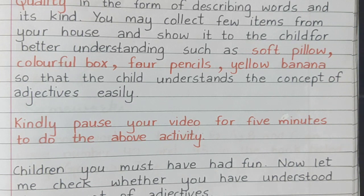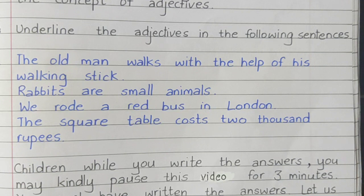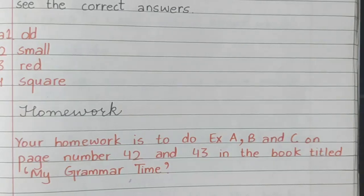Children, you must have had fun. Now let me check whether you have understood the concept of adjectives. Exercise A: Underline the adjectives in the following sentences. 1. The old man walks with the help of his walking stick. 2. Rabbits are small animals. 3. We rode a red bus in London. 4. The square table cost 2,000 rupees. Kindly pause this video for three minutes to write your answers. The correct answers are: 1. old, 2. small, 3. red, 4. square.